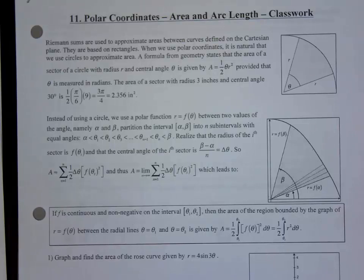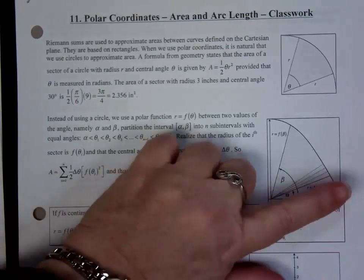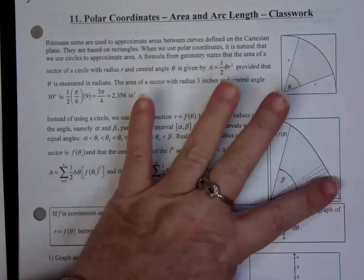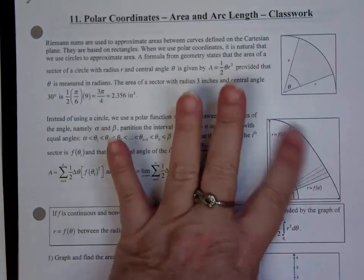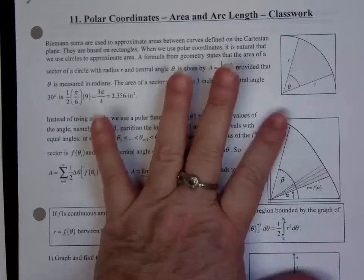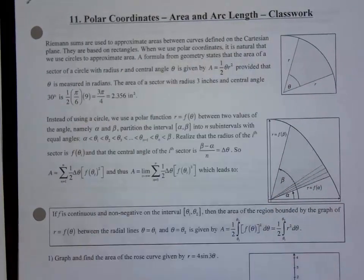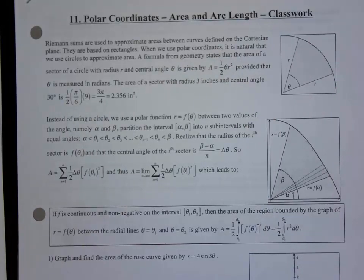Because we are measuring things on an angle, our unit of measure is not a rectangle. It's a tiny, tiny, little bitty slice of pizza.